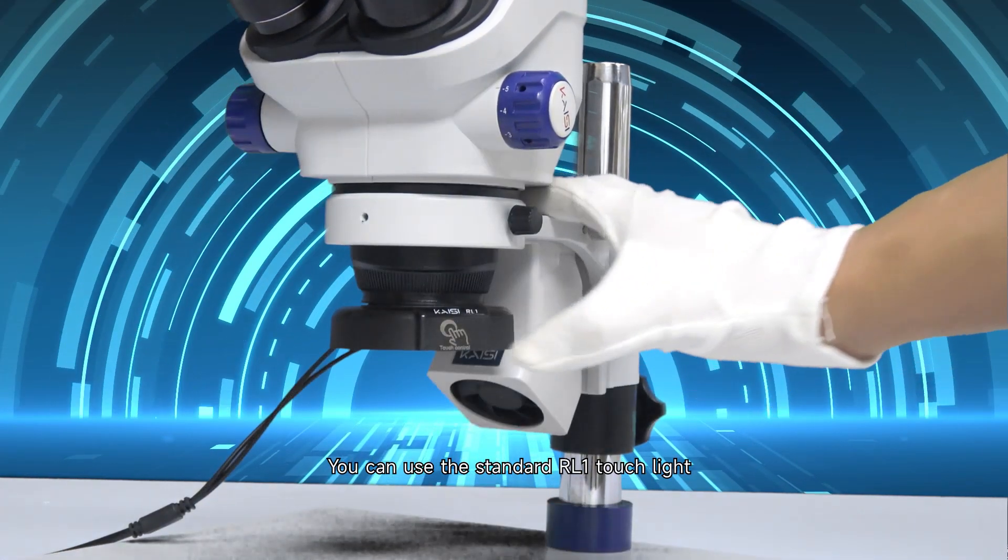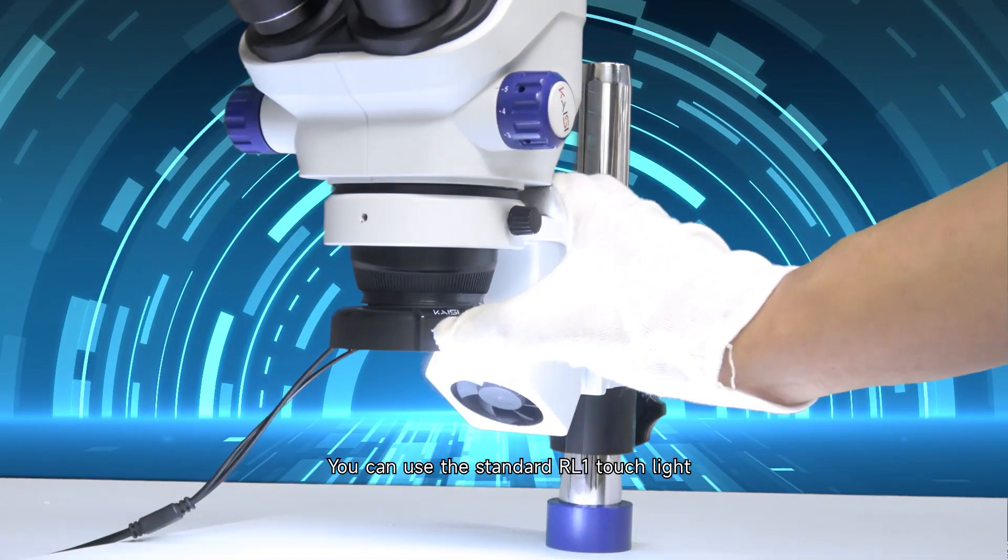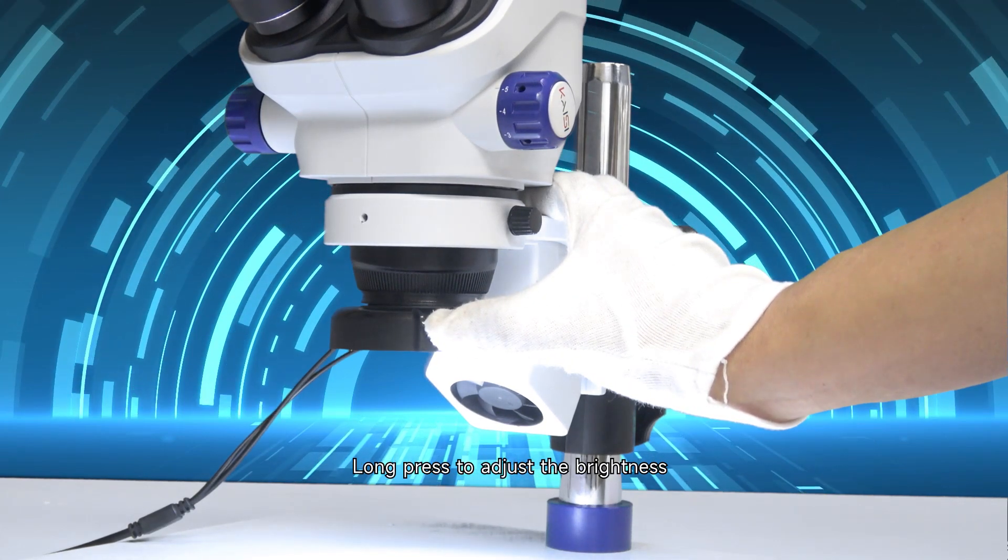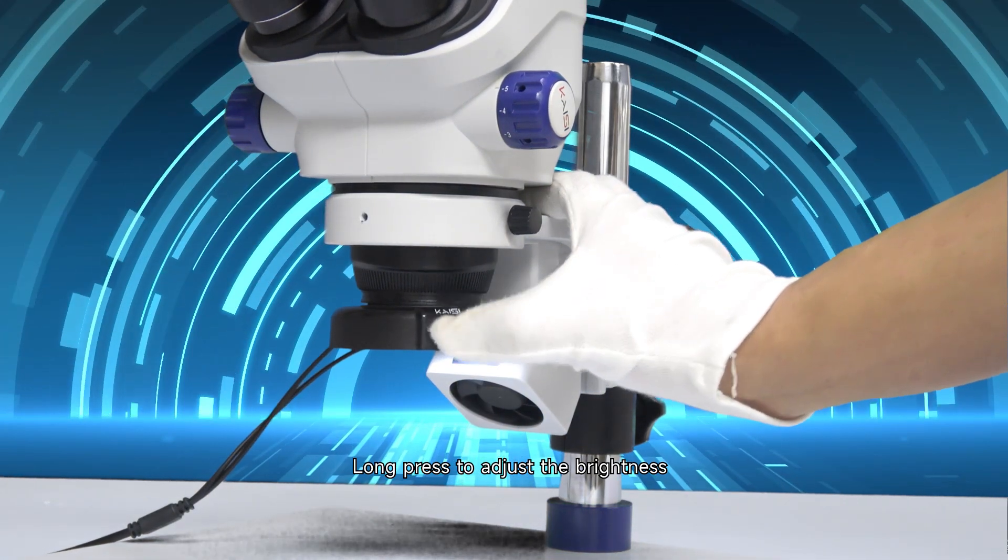When the light is not enough to observe the situation, you can use the standard RL1 touch light. Just touch the button to turn on or off the light. Long press to adjust the brightness.